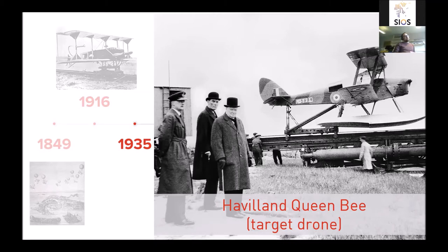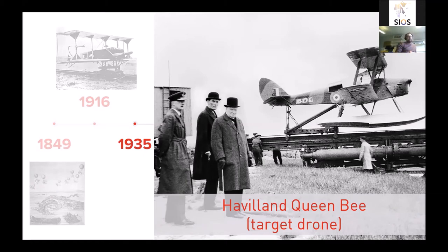The Queen Bee was developed as a target drone — anti-aircraft gunners on the ground needed something to train their shooting with, and an unmanned aircraft was a perfect solution. They took the Tiger Moth and built a remotely controlled version called the Queen Bee. Interestingly, because it's a Queen Bee and the workers of the queen bee are called drones — this is basically where the name 'drone' comes from.